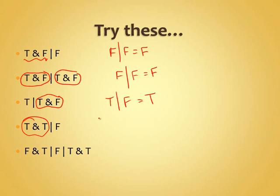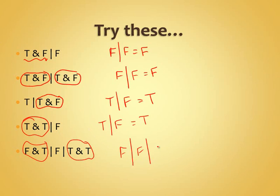Then we have 'true AND true OR false': true AND true is true, then true OR false is true. For 'false AND true OR false OR true AND true': false AND true is false, and true AND true is true, so false OR false OR true — false OR true is true.